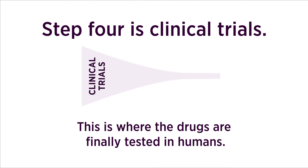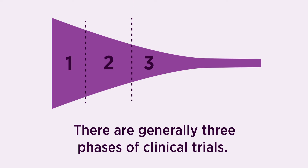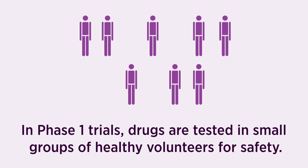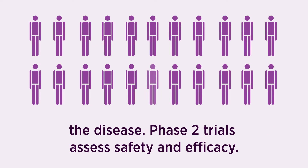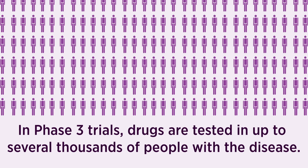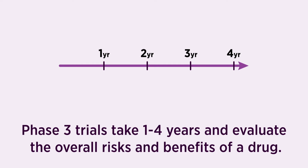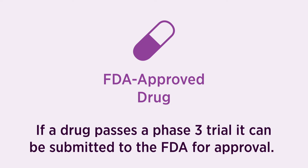Step 4 is Clinical Trials, where the drugs are finally tested in humans. There are generally three phases of clinical trials. In Phase 1 trials, drugs are tested in small groups of healthy volunteers for safety. In Phase 2 trials, drugs are tested in groups of up to a few hundred people who have the disease, assessing both safety and efficacy. In Phase 3 trials, drugs are tested in up to several thousands of people with the disease. Phase 3 trials take one to four years and evaluate the overall risks and benefits of a drug.